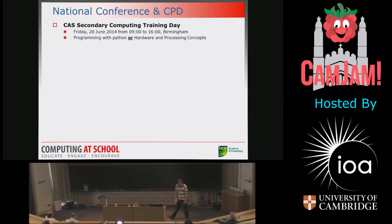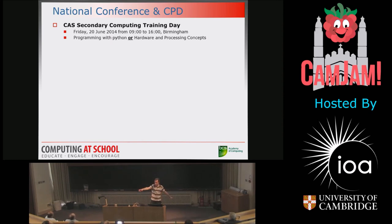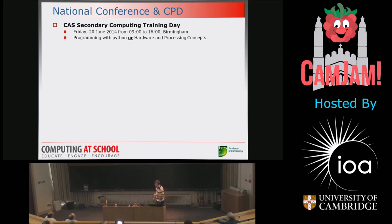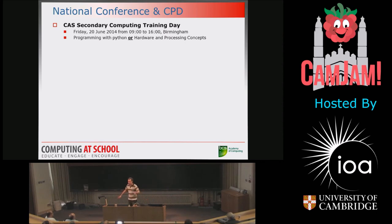Also, the National Conference. The CAS National Conference is a fantastic experience — two or three hundred people in a room talking about computer science and how we deliver it at school, going off and doing a vast array of workshops. This year is slightly different: instead of one day, on Friday the 20th of June in Birmingham, there's a secondary computing training day where you can choose between a workshop on programming with Python or on hardware and processing concepts.